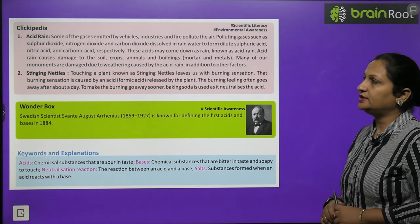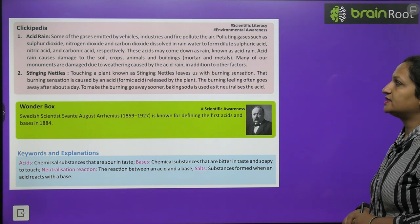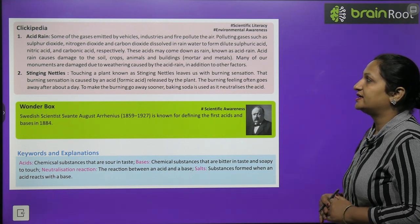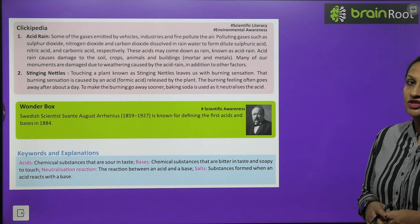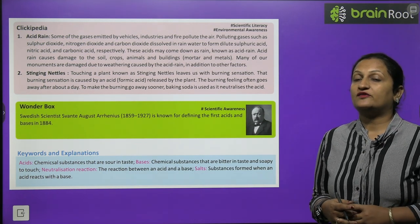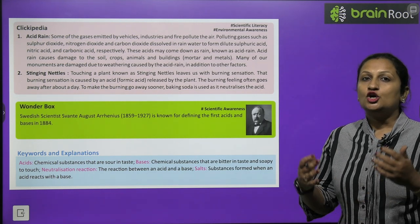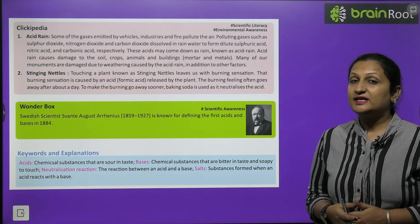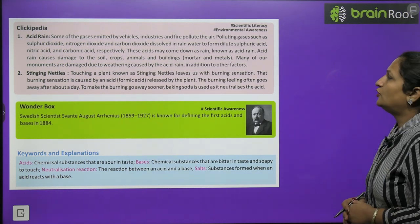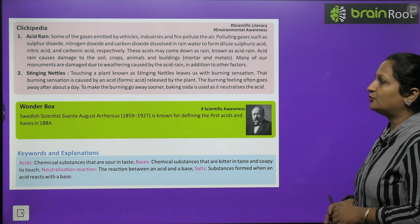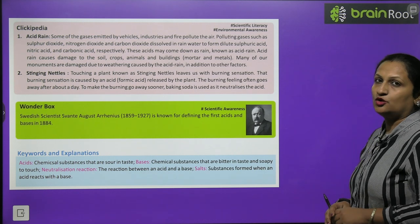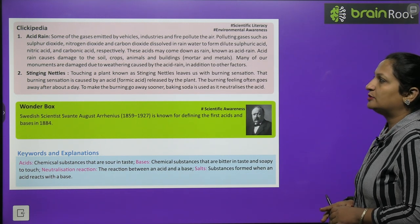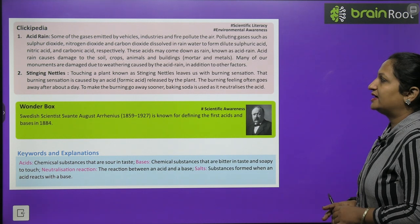Have a look on Clickypedia, children. Acid rain: Some of the gases emitted by vehicles, industries, and fire pollute the air. Polluting gases such as sulfur dioxide, nitrogen dioxide, and carbon dioxide - this is our atmosphere. And when rain happens, these are dissolved by the acid, which will be washed down on earth. Now the acid is falling down on plants, animals, buildings to form dilute sulfuric acid, nitric acid, carbonic acid respectively. These acids may come down as rain, known as acid rain. Acid rain can damage crops, soil, animals, buildings. Many of the monuments are damaged due to weathering caused by acid rain, in addition to other factors.